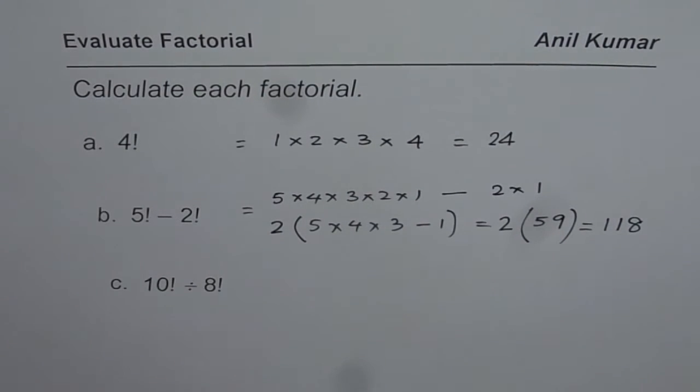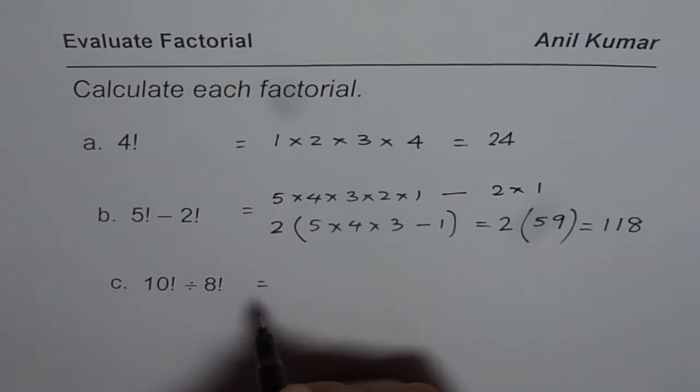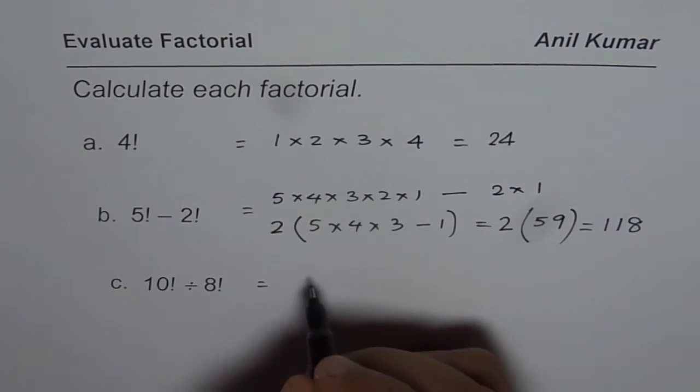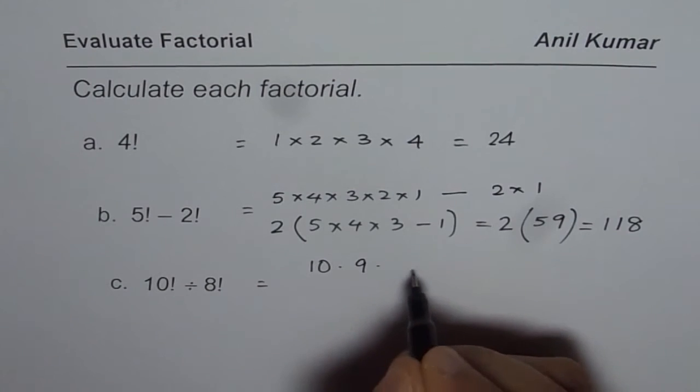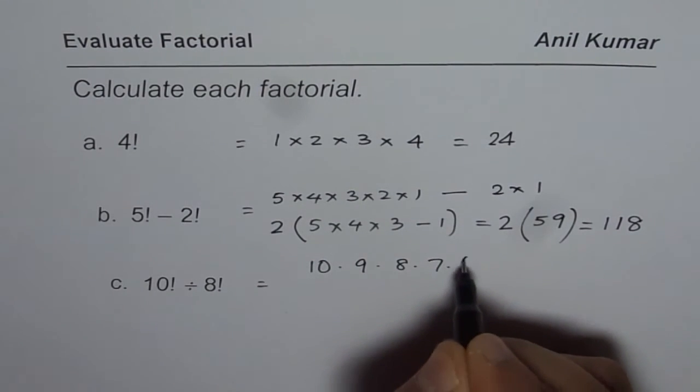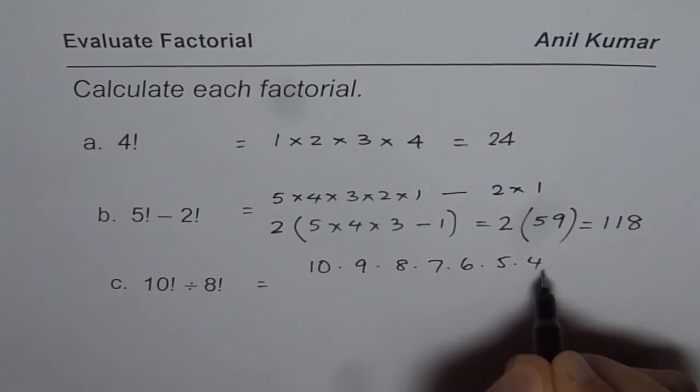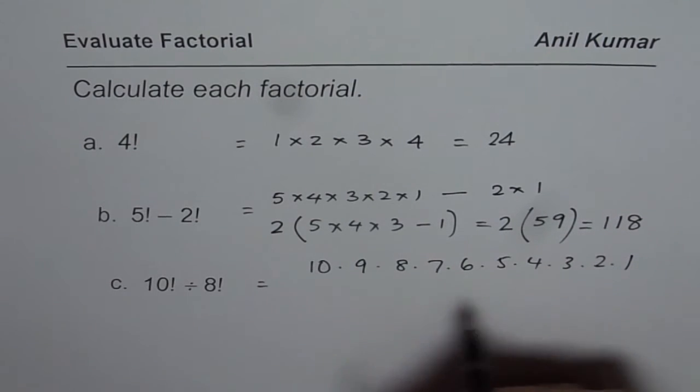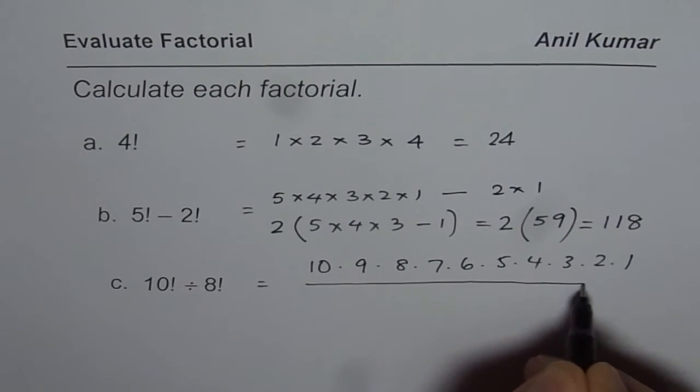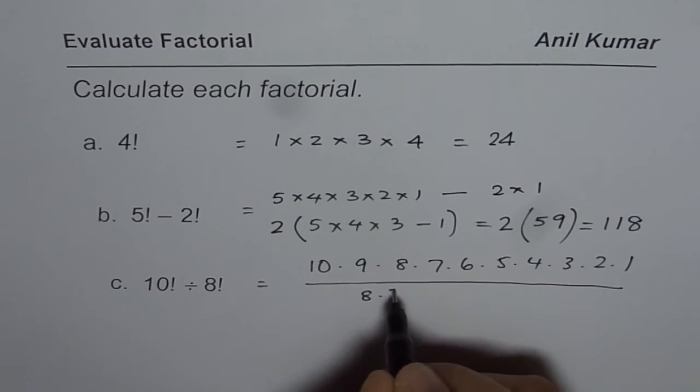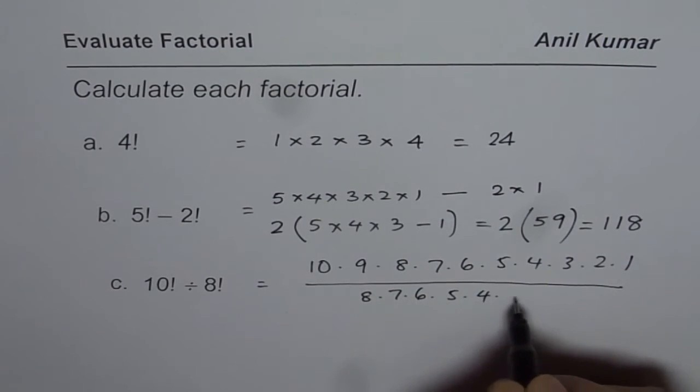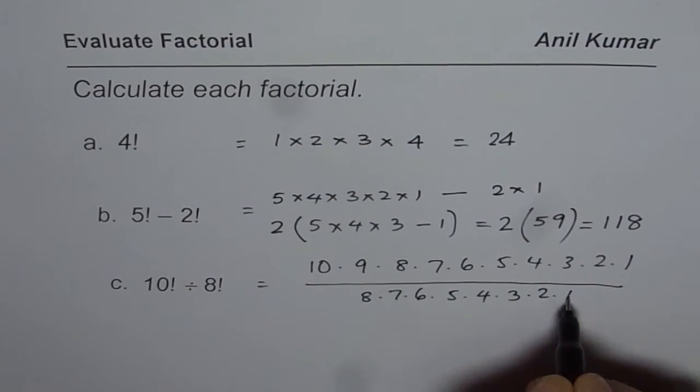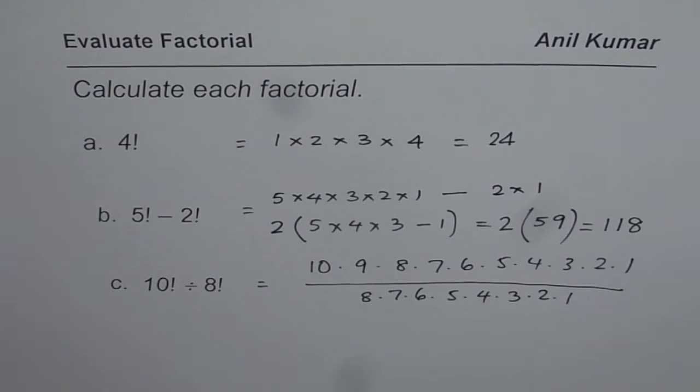Now let us do 10 factorial divided by 8 factorial. Of course one way is you can calculate what 10 factorial is which is 10 times 9 times 8 times 7 times 6 times 5 times 4 times 3 times 2 times 1 divided by 8 times 7 times 6 times 5 times 4 times 3 times 2 times 1. You can calculate the values using the calculator.